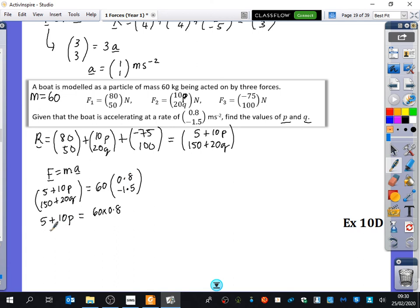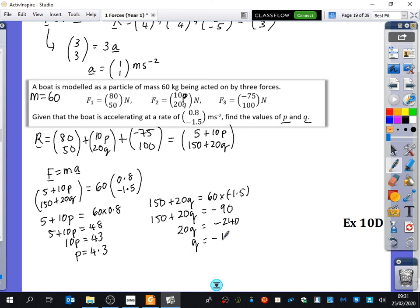I don't know why I'm doing that on my calculator. So we get 5 plus 10P is equal to 48. So 10P is 43. So P is 4.3. And then from the bottom part, from the j part, we get 150 plus 20Q is equal to 60 times minus 1.5. So that's 150 plus 20Q is equal to minus 90. So 20Q is my brain is so not awake, minus 240. So Q is minus 12.